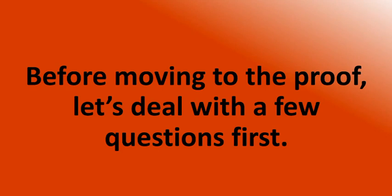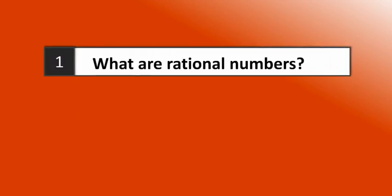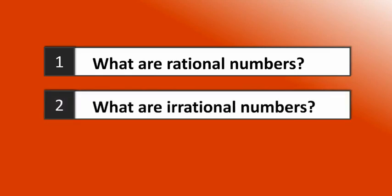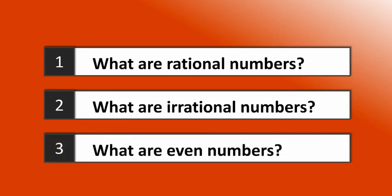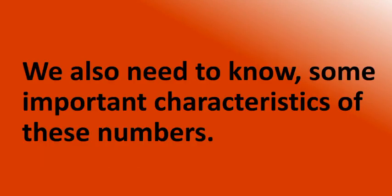Before moving to the proof, let's deal with a few questions first. Number one: what are rational numbers? Number two: what are irrational numbers? And number three: what are even numbers? We also need to know some important characteristics of these numbers.